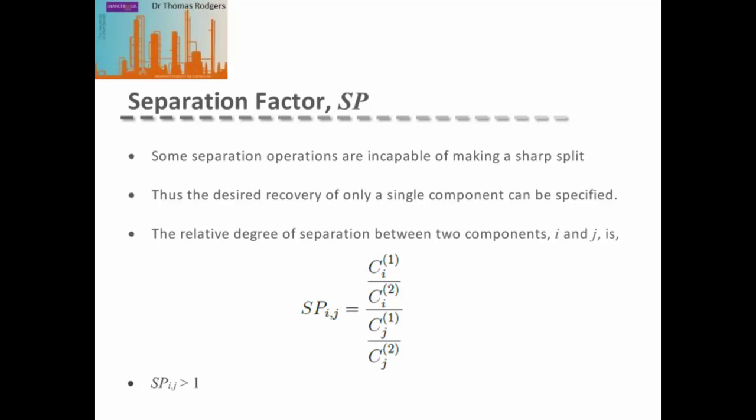For these types of systems, a measure of the relative degree of separation between the two key components can be given by the separation factor or separation power. The separation power is the ratio between our key component I in the first and second product stream divided by the same ratio for our component J.